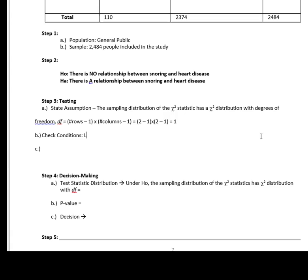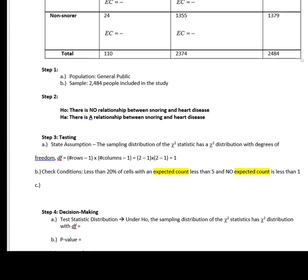When I check conditions, remember there are two parts: you can have less than 20% of your number of cells with an expected count less than five, and no expected count can be less than one. Because these are based on expected counts, I will have to go into my table and calculate expected counts for all of the cells.